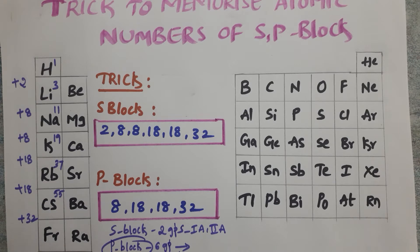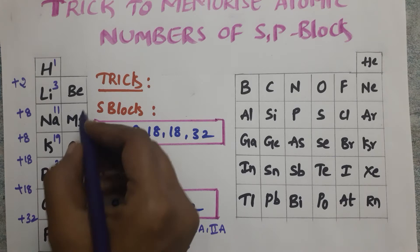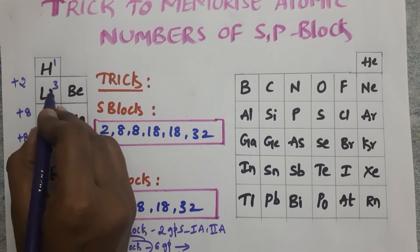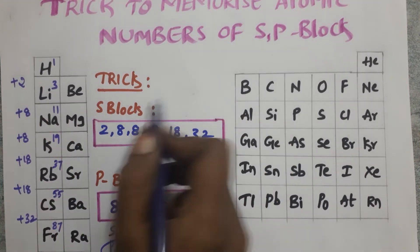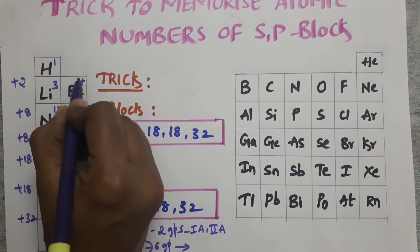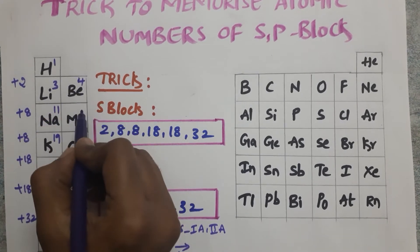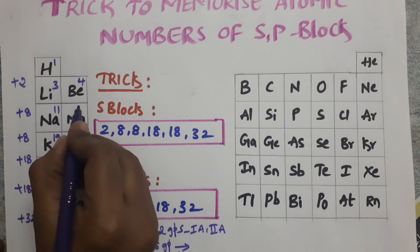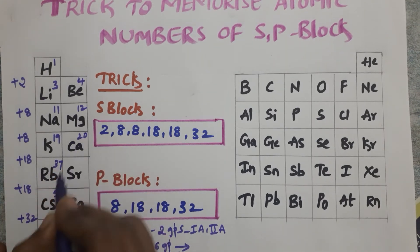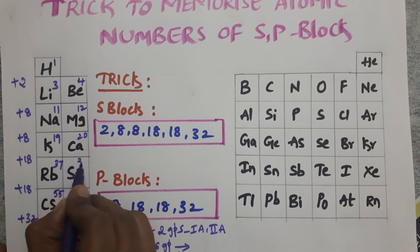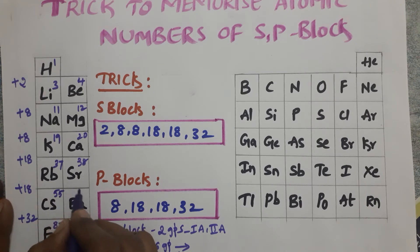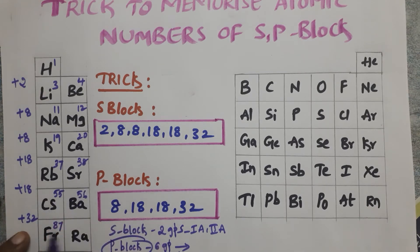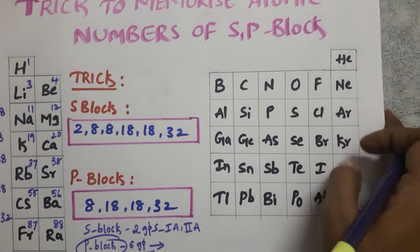For group 2, the atomic numbers increase by 1 from group 1. Beryllium starts at 4. Then 4 plus 8 equals 12, 12 plus 8 equals 20, 20 plus 18 equals 38, 38 plus 18 equals 56, and 56 plus 32 equals 88. This covers all the s block elements.